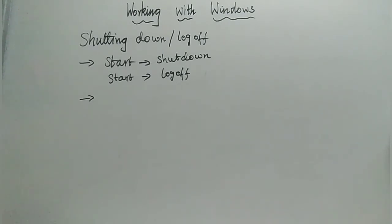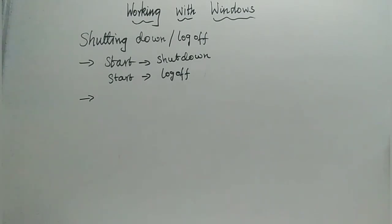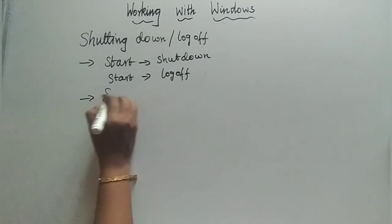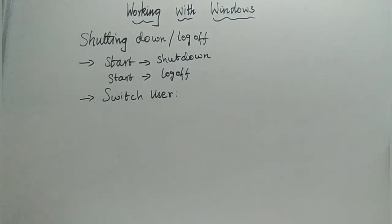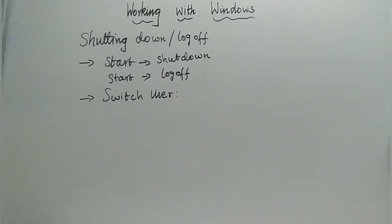If you didn't save a document, it will remain unsaved; saved documents will be saved. Now, next to the Shut Down button there is a side arrow. Clicking it displays a pop-up with many options. The first option is Switch User. If your computer has multiple users, you can switch from one user account to another using this option.